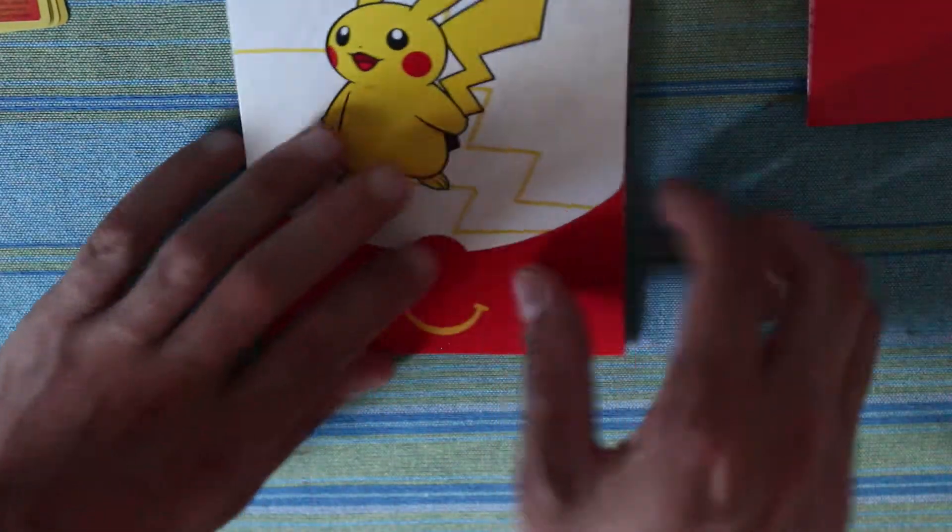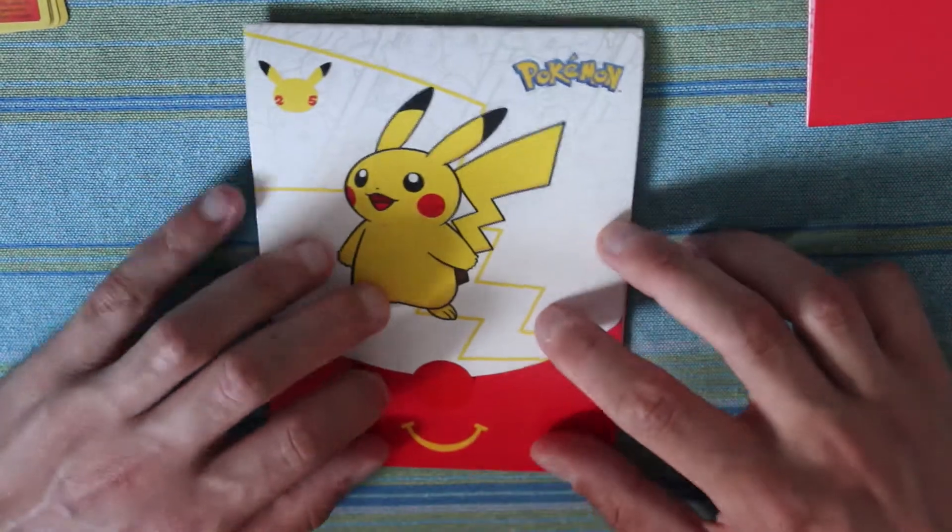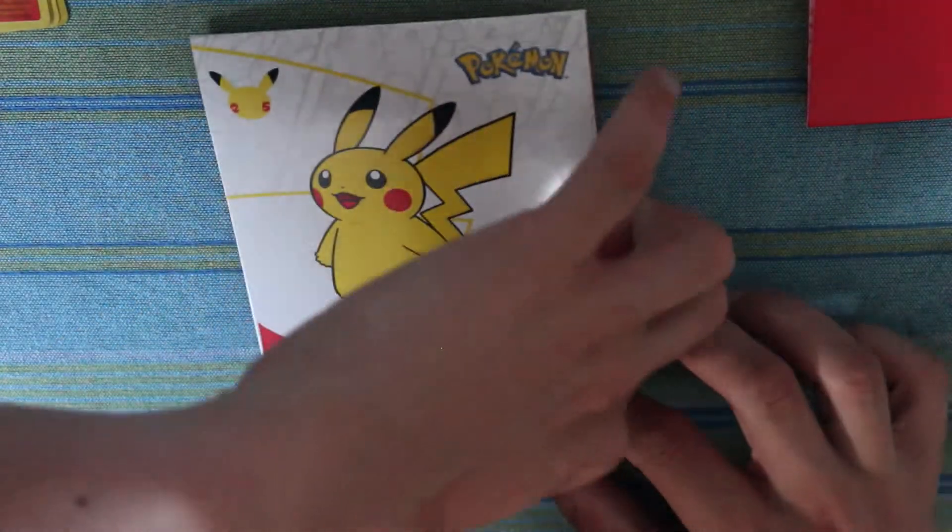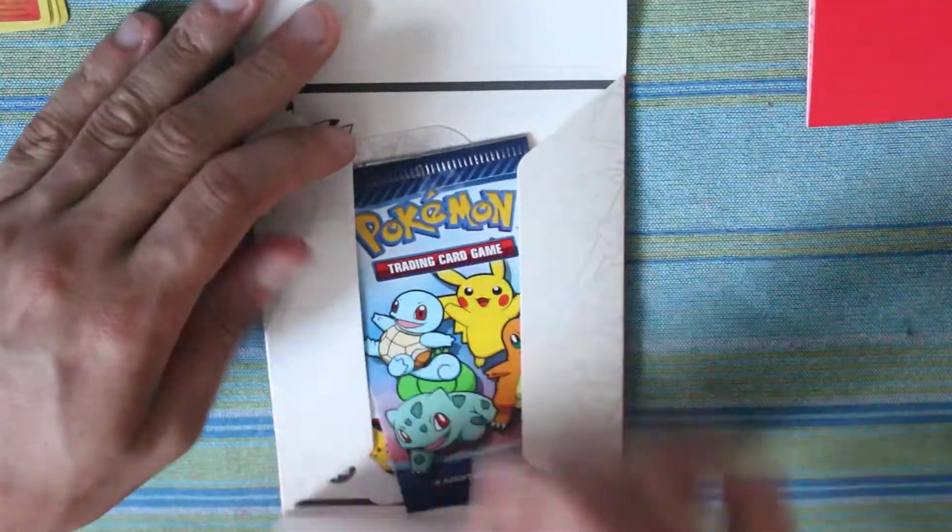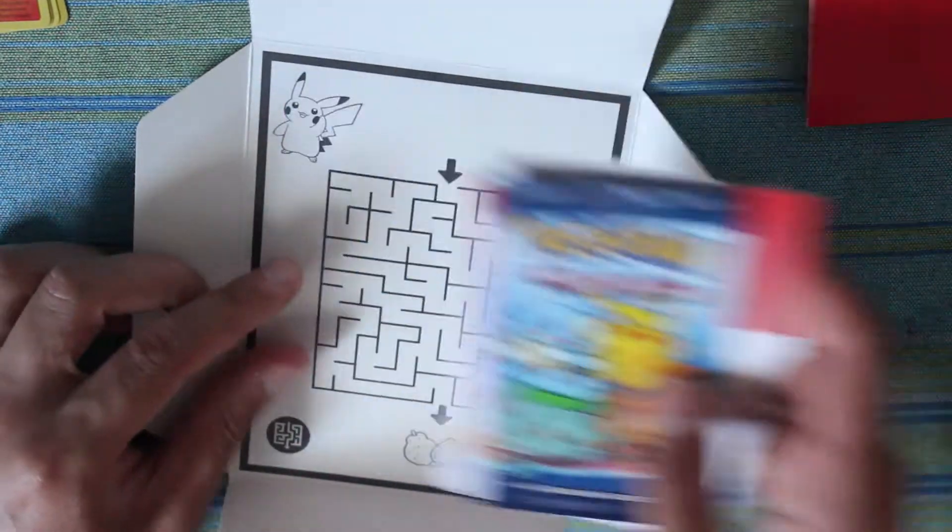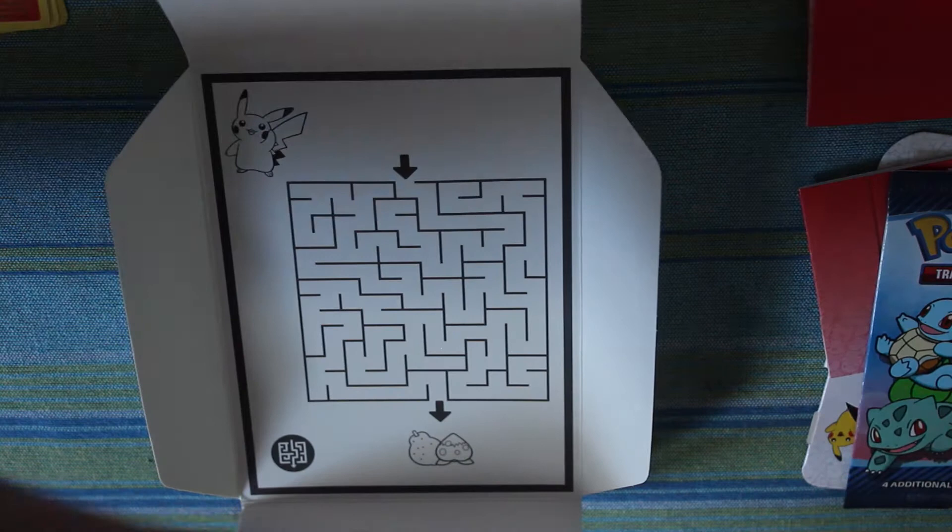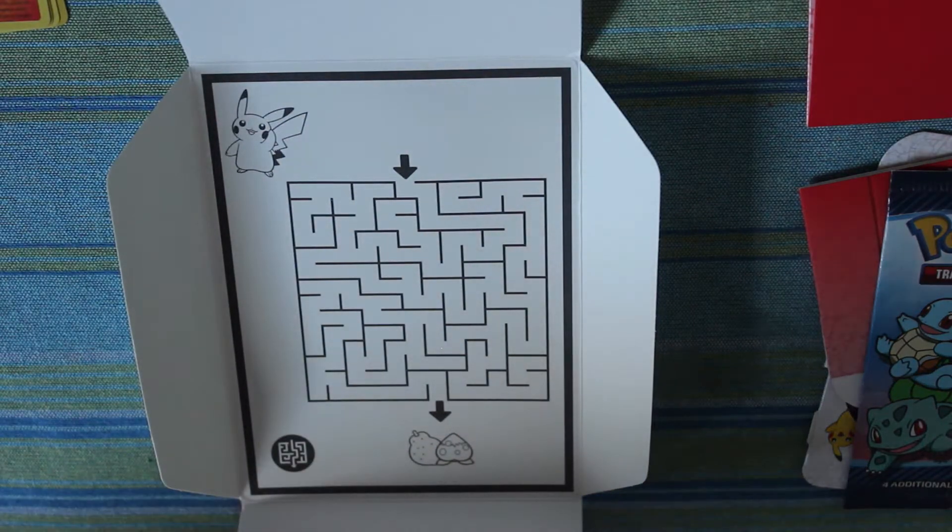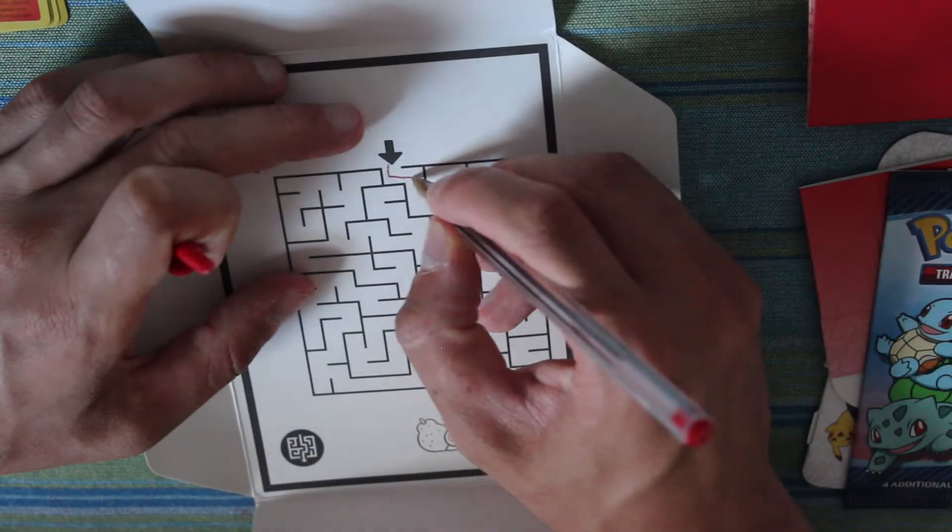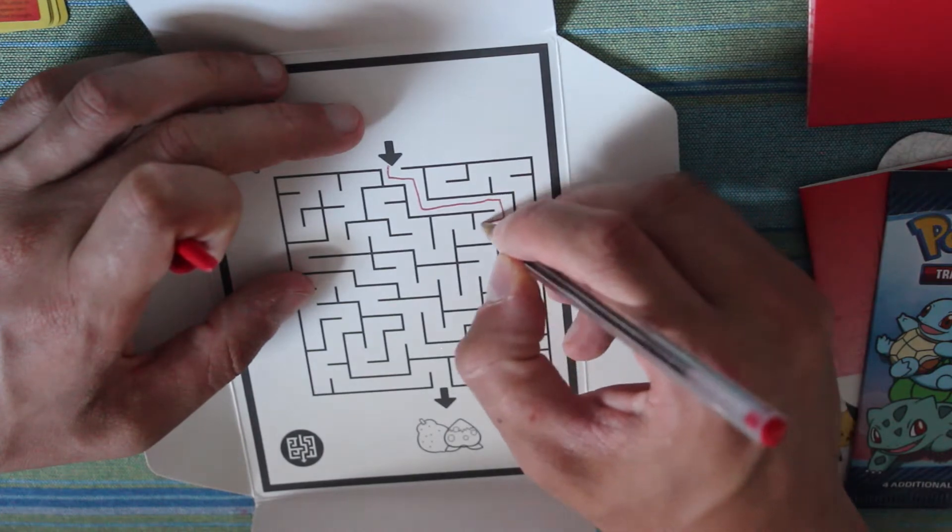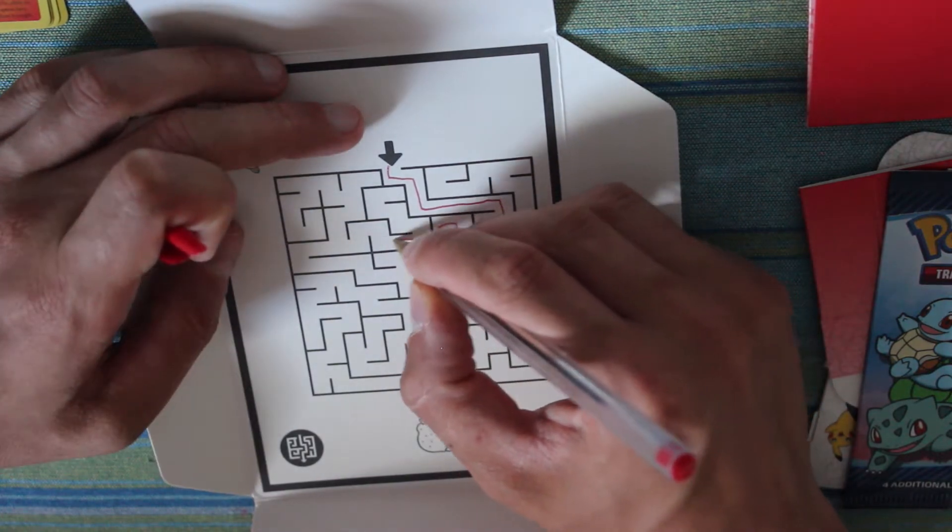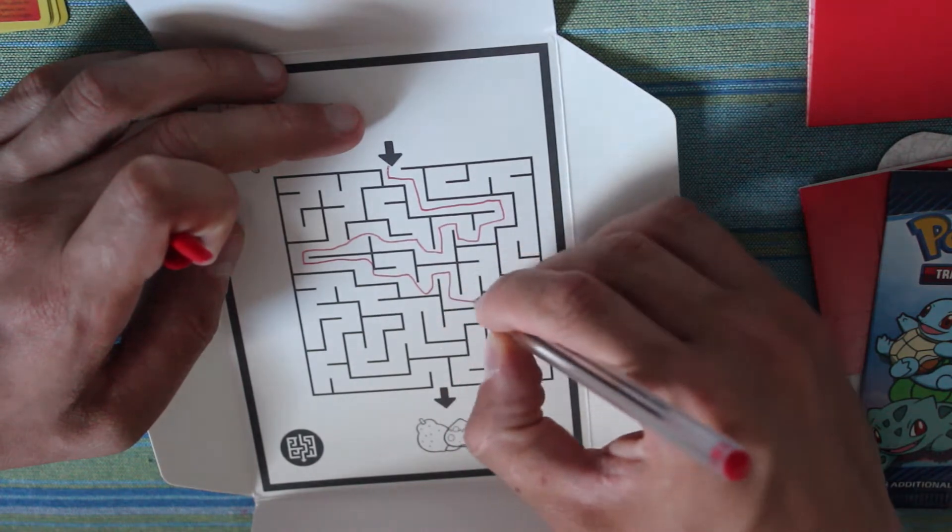Now let's go into the second pack. In this pack we have another Pokemon pack, another maze. This one is different, it's a square one. Let's see if I can do this from the first. Pikachu needs to get to his berries. Pikachu really needs his berries. He's hungry, so let's not make him wait for his berries. Come on Pikachu.